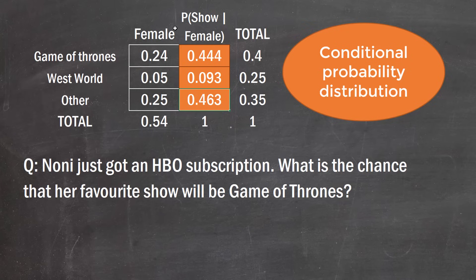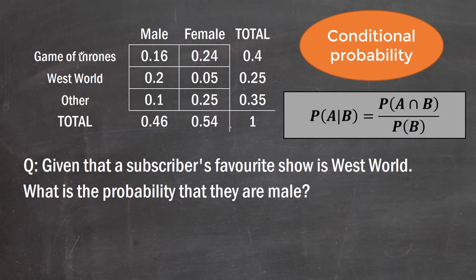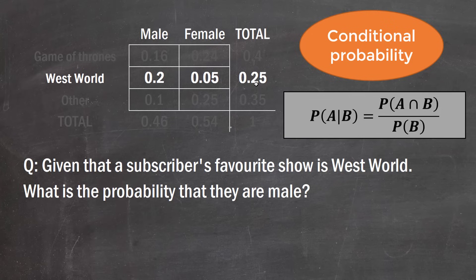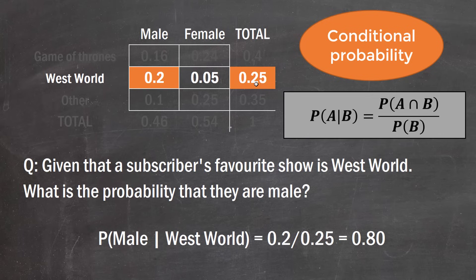We can use this to assess whether the two variables — gender and show choice — are independent. We can also go the other way with conditions: given that a subscriber's favorite show is Westworld, what's the probability they are male? The condition is now an entire row. We block out everything except the Westworld row, then divide the joint probability 0.2 by the marginal probability 0.25, giving 0.8 — meaning 80% of Westworld viewers are male.